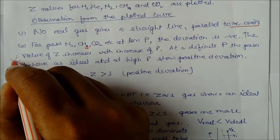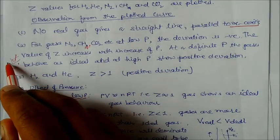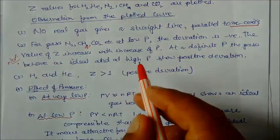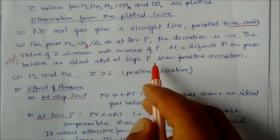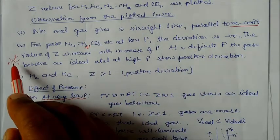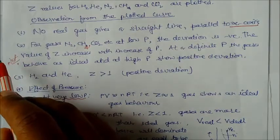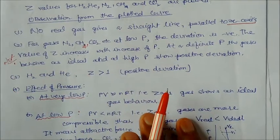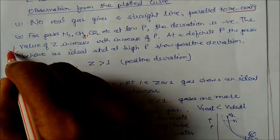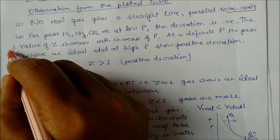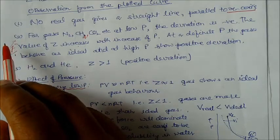When pressure increases, Z increases for most gases. On the PV versus pressure graph, at low pressure a gas may behave nearly ideally, but at high pressure it shows positive deviation. For hydrogen and helium, Z was always greater than 1, meaning these gases always show positive deviation — they are above the ideal gas line throughout the pressure range.